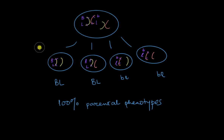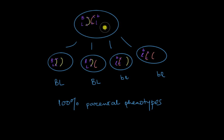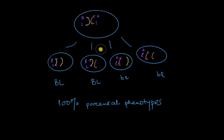Before moving on, let's simplify things by removing the extra pair of chromosomes. All the genes we're going to work with are already present on the same chromosome, so we don't need extra chromosomes. We needed them earlier when considering that genes could be on different chromosomes, but that's no longer the case. With all extra chromosomes removed, we can now dive deep into how this process actually works.